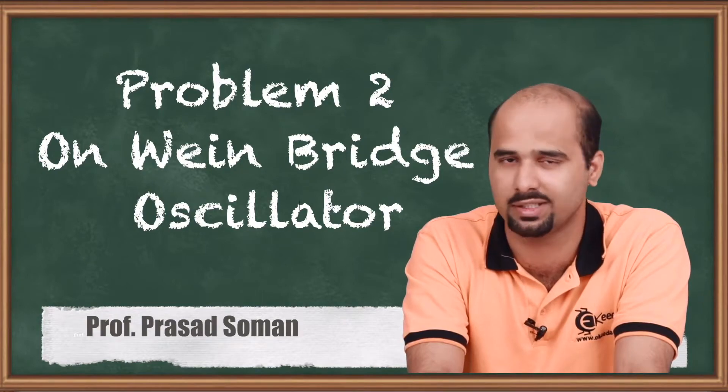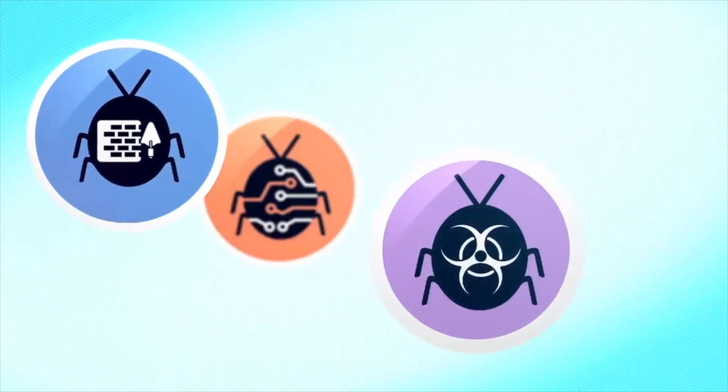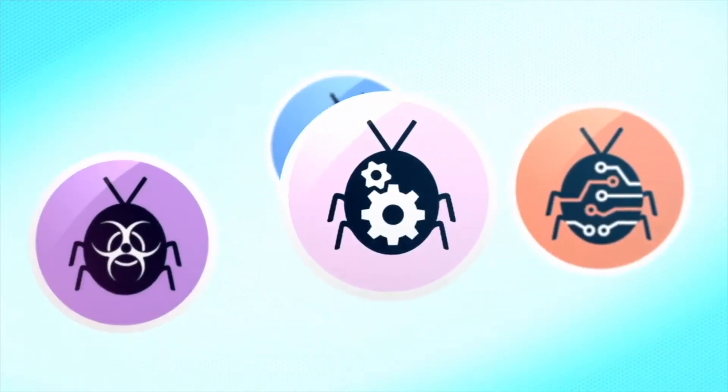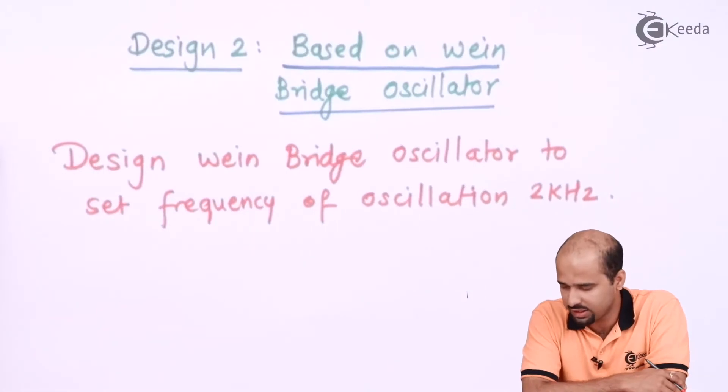So let's come to the particular question - what they have asked us to set that particular frequency. Let's start the numerical. In this particular numerical they just have asked us to design Wien bridge oscillator to set frequency of oscillation of two kilohertz.